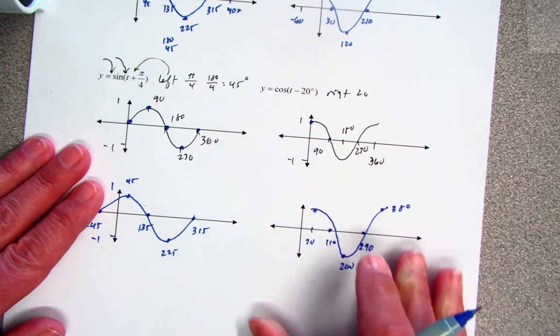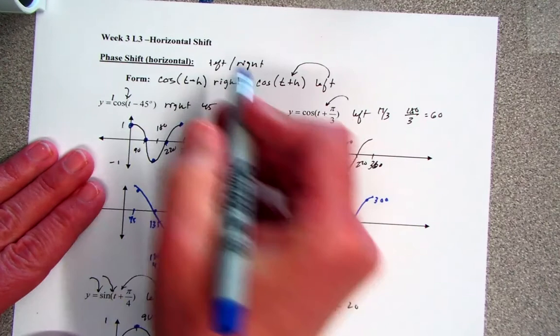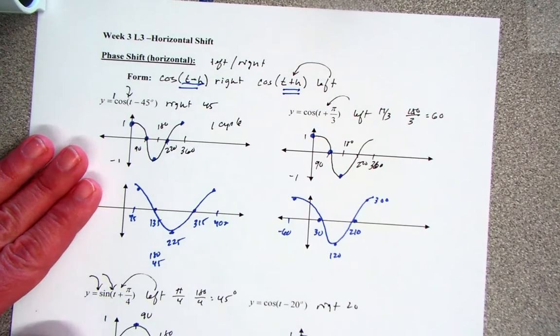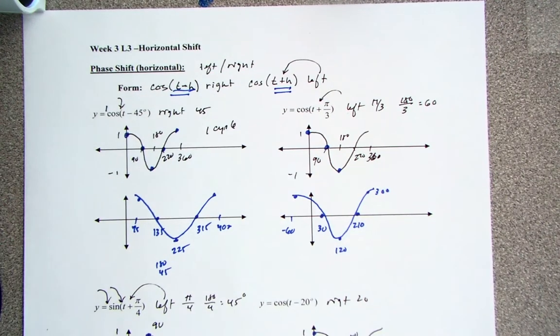So that's what that value inside does. The big key idea is understanding if it moves left or right.